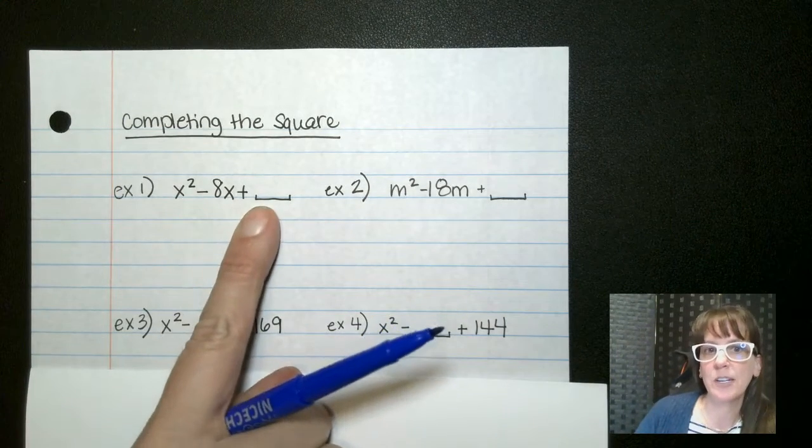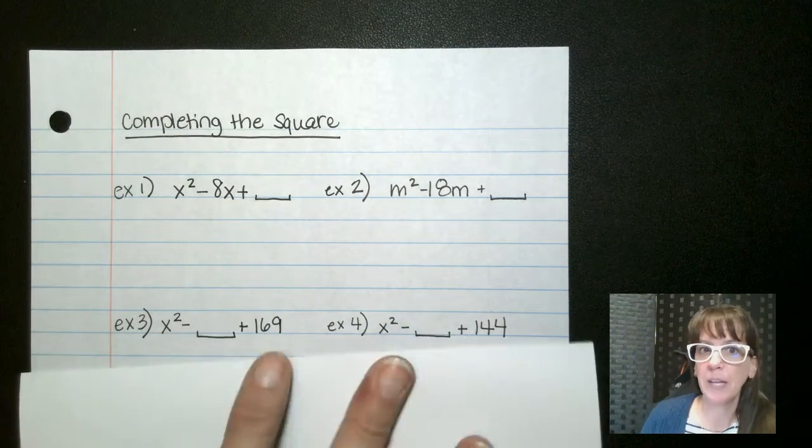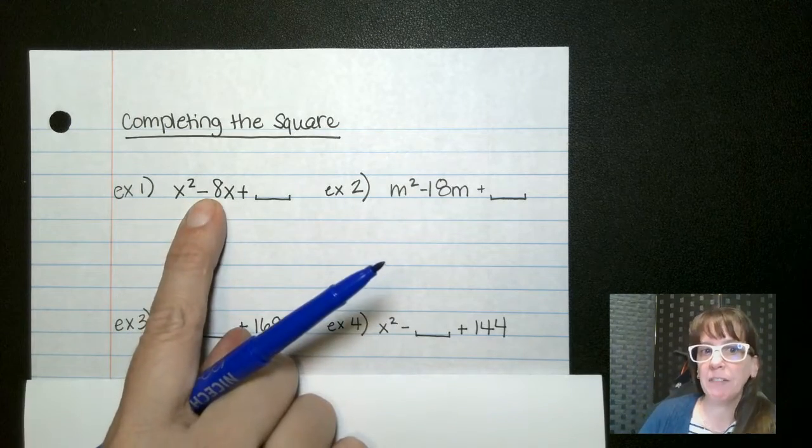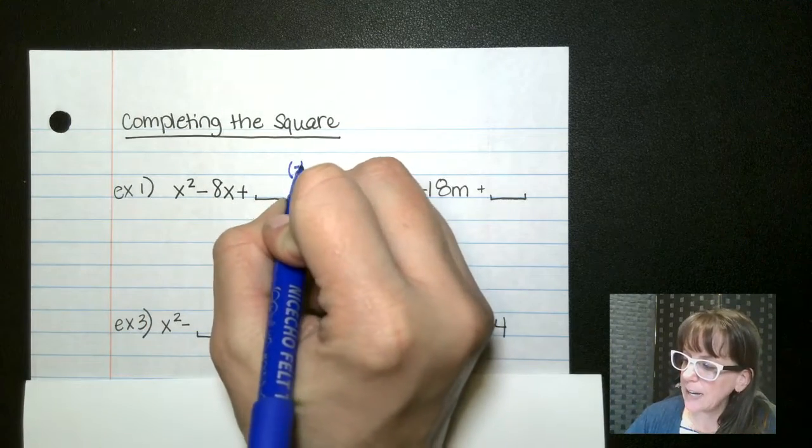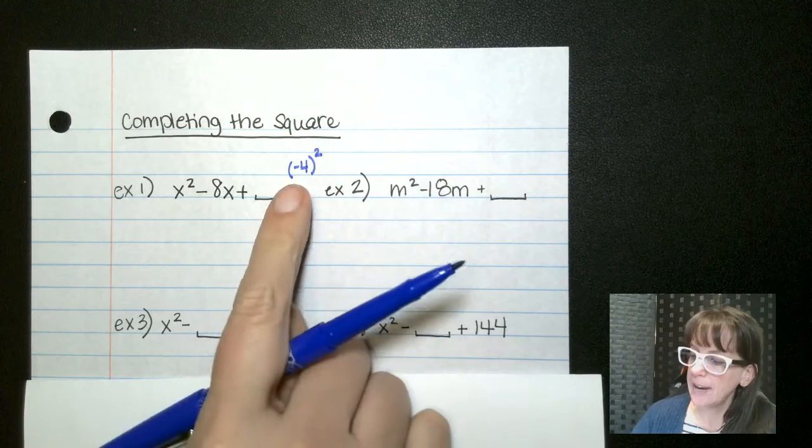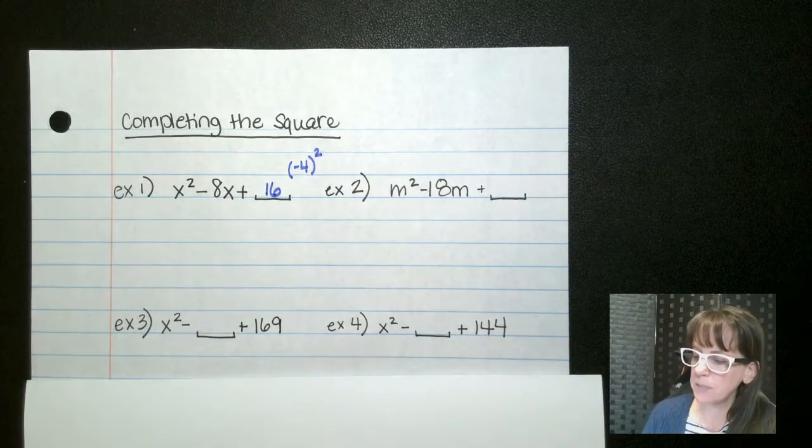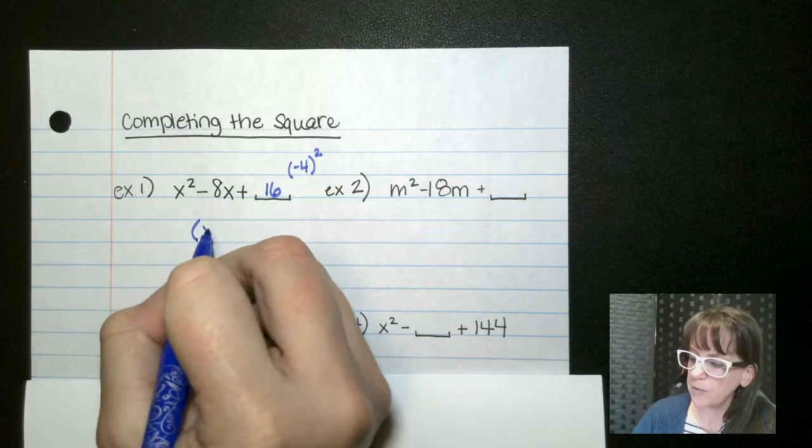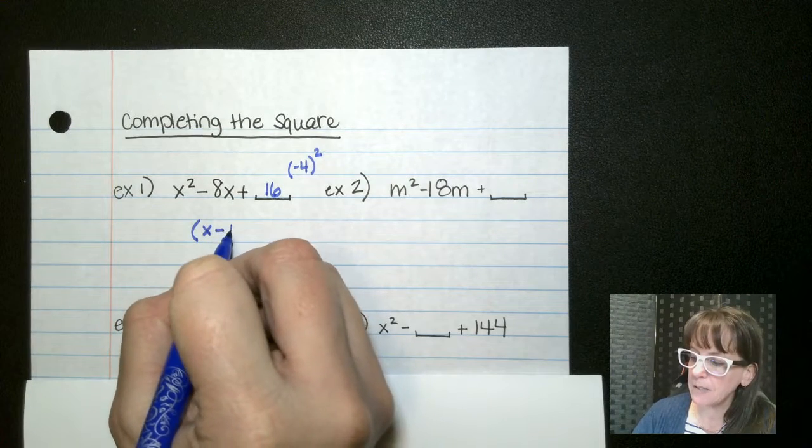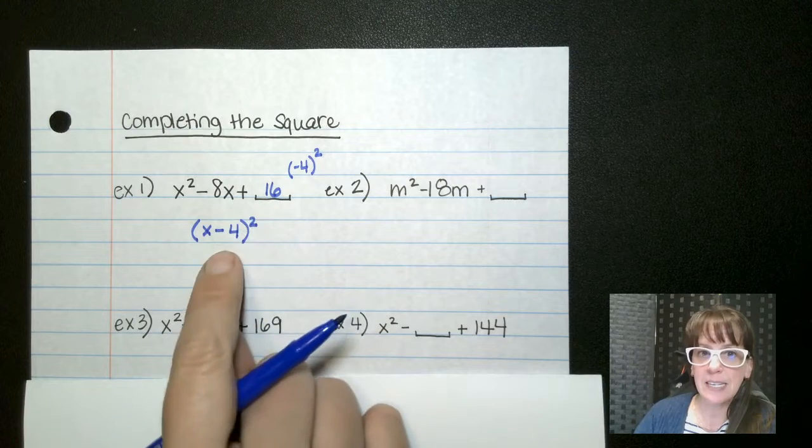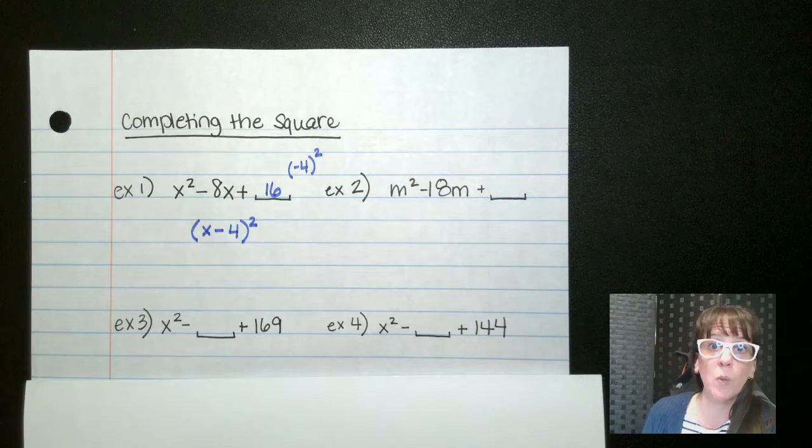So what we wanna do is we wanna take this and turn it into a perfect square trinomial. And the way that we do that is we take half of this, so that's negative four, and we square it. Now, quantity negative four squared is positive 16, but that negative is important because now when we factor it, we have x minus four squared, not minus 16, minus four. So it's whatever we're squaring.